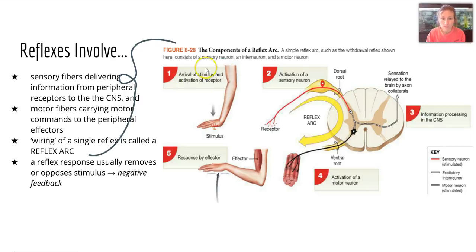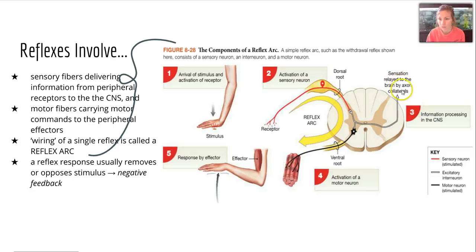The five steps of the reflex arc are: one, arrival of a stimulus and activation of a receptor; two, activation of a sensory neuron — the red line in the diagram; three, information is processed in the central nervous system, with sensation relayed to the brain by axon collaterals through a section of the spinal cord; four, activation of a motor neuron; and five, response by the effector. A reflex response usually removes or opposes the stimulus, making this an example of negative feedback.